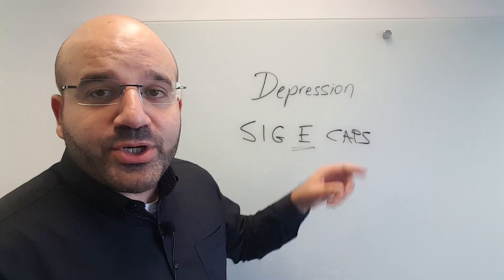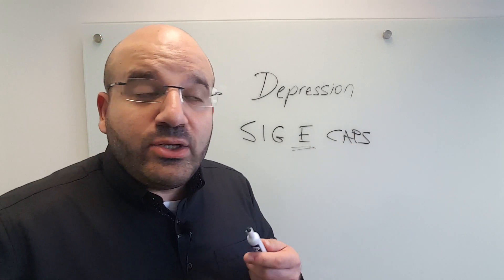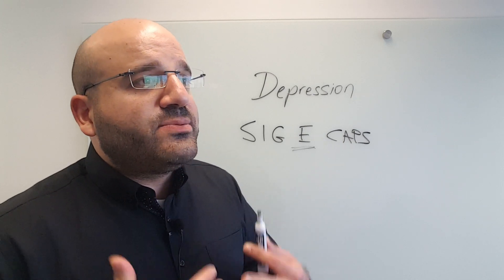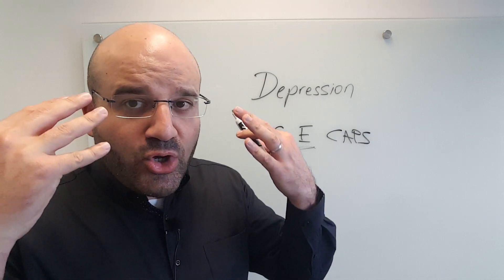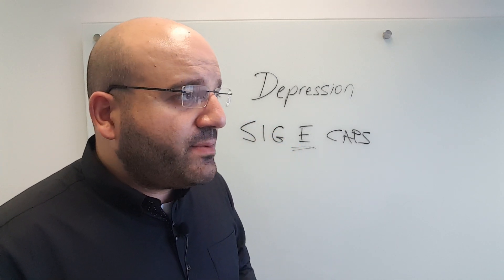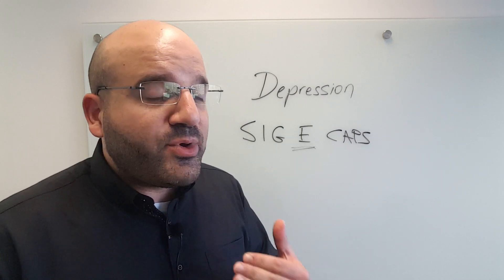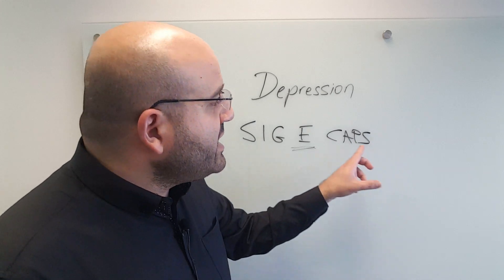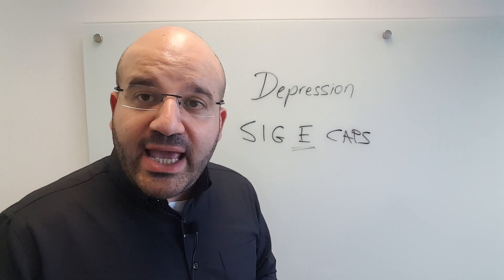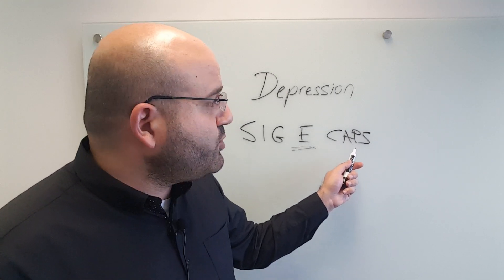The P stands for psychomotor retardation. What that means is the person is both cognitively and physically slowed down in depression. Some people might describe it like walking through molasses. In some cases it can manifest as psychomotor agitation, but the slowed down state is much more common.